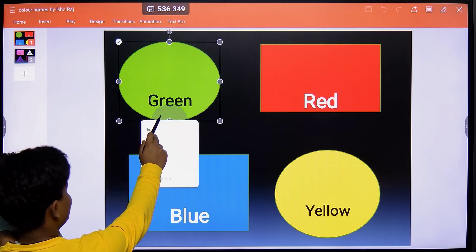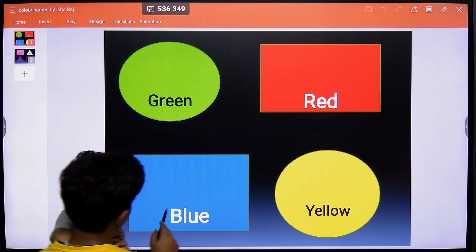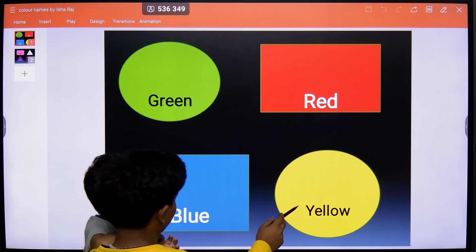What is this color? Green. That one? Red. That one? Blue. That one? Yellow.